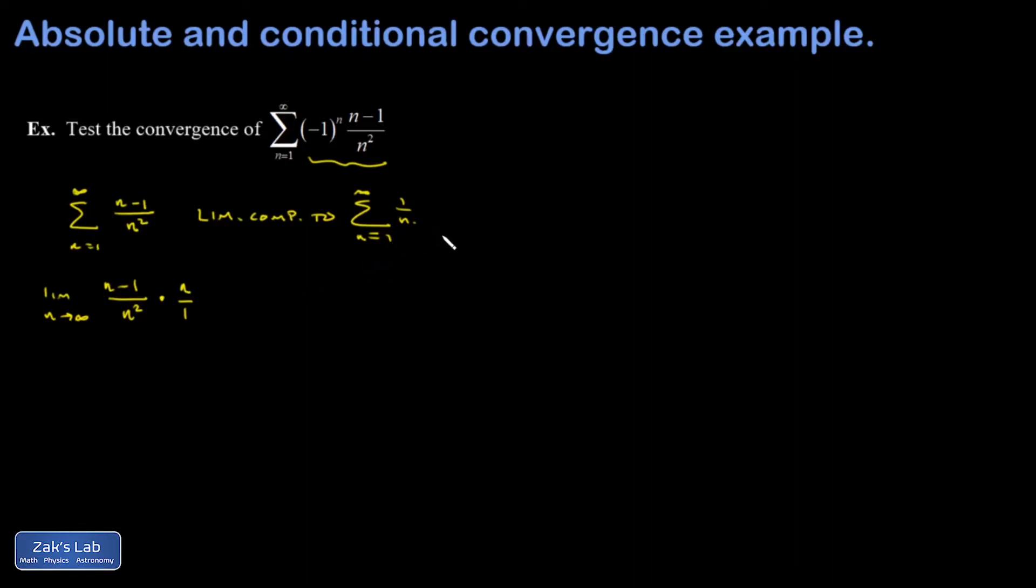If this settles down to some finite number, then we'll conclude that both of these series diverge. Again, we knew in advance that the harmonic series diverges. Cancel one of those ends. I can just go ahead and divide both those terms by n and I get one minus one over n. One over n unambiguously goes to zero and I get one out of this limit, so both of these diverge.